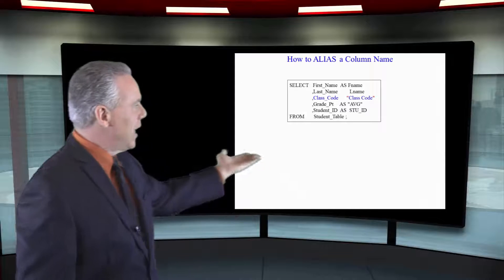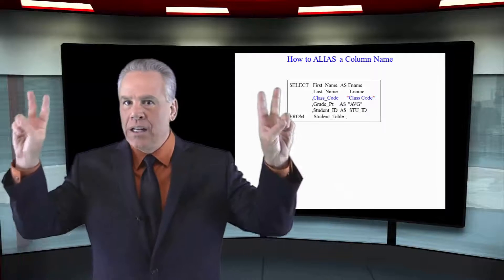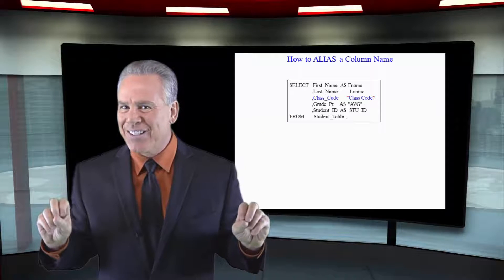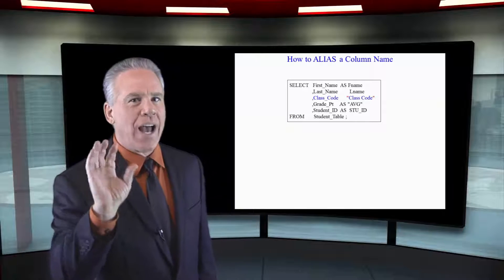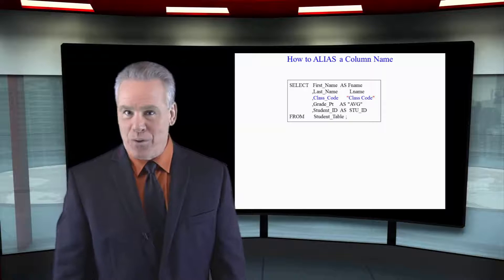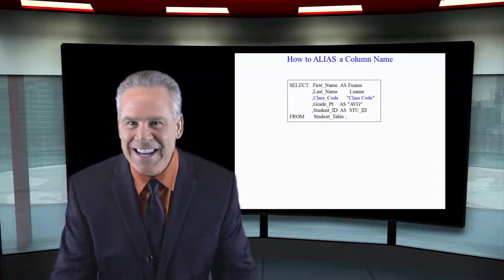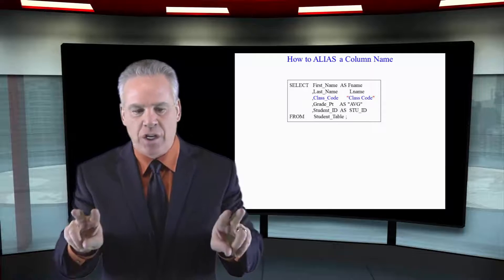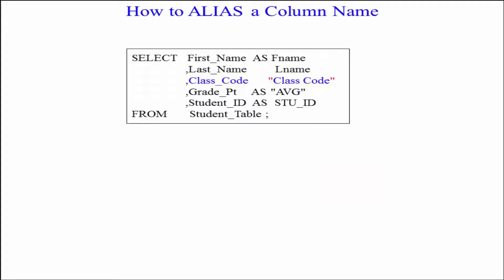As you can see, class code double quotes class code. Why do I need double quotes there? Because there's a space. Any spaces in your alias, you've got to put double quotes around it.